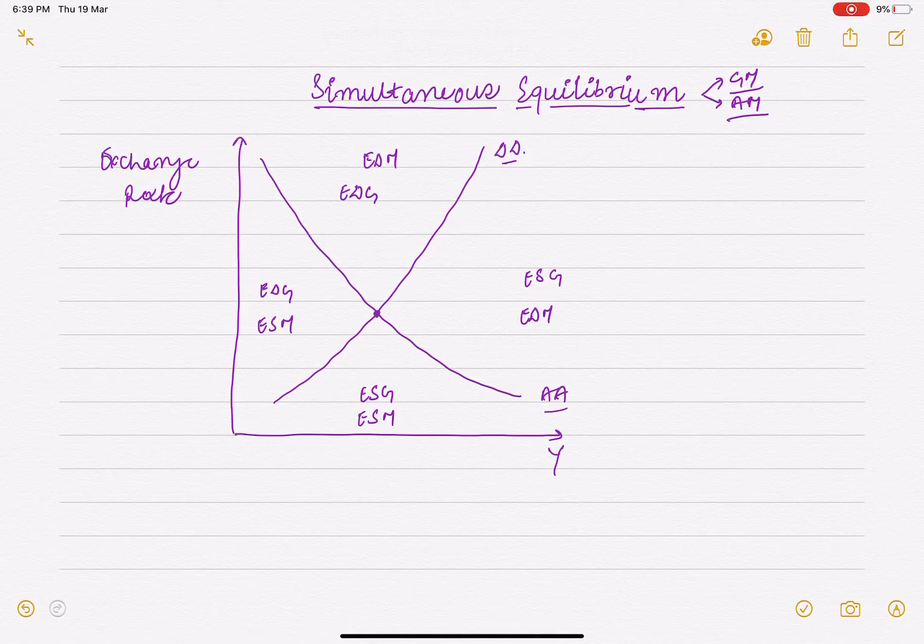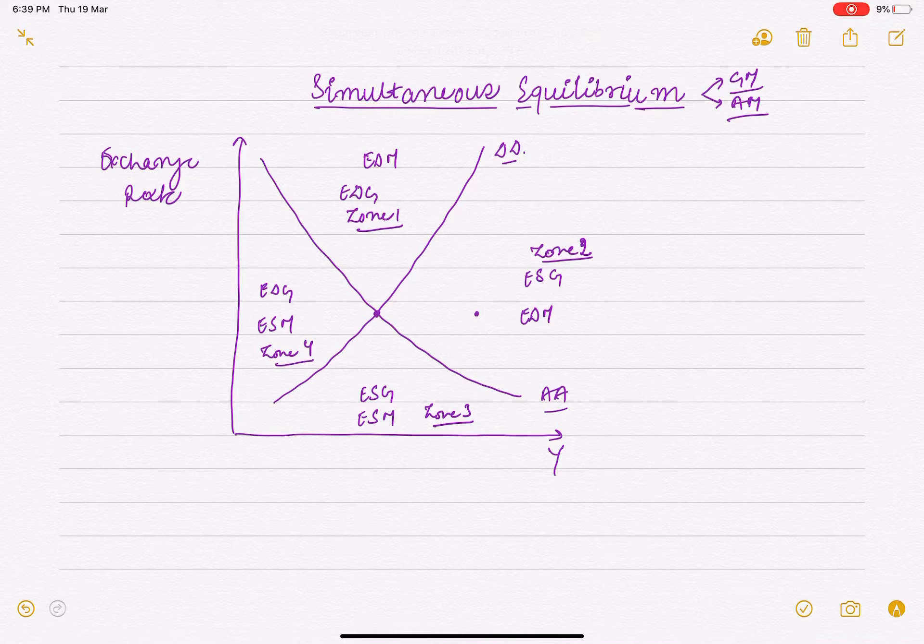Let us suppose an arbitrary point. This is zone 1, this is zone 2, zone 3, zone 4. So at a point of disequilibrium, which has excess supply of goods and excess demand for money - at this point we see disequilibrium where there is excess supply of goods and excess demand for money.